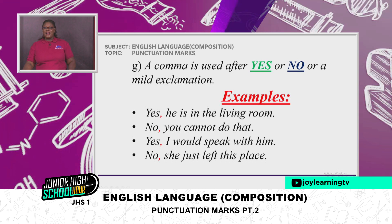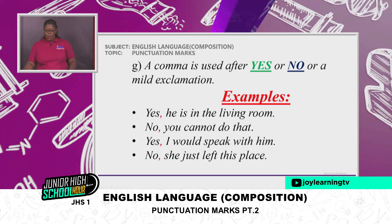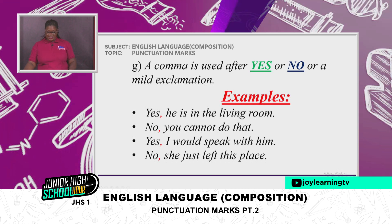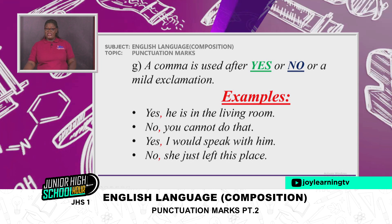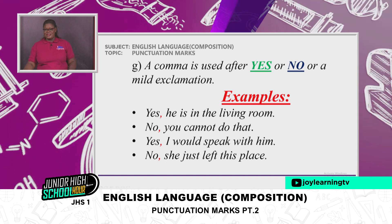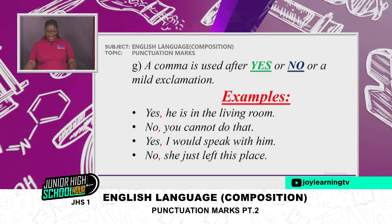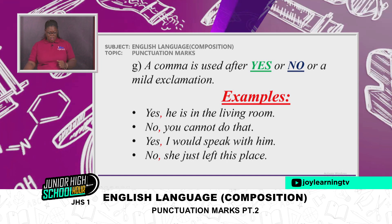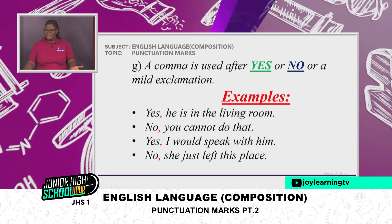A comma is used after 'yes' or 'no' or a mild exclamation. Examples: 'Yes, he is in the living room.' 'No, you cannot do that.' 'Yes, I would speak with him.' 'No, she just left this place.' You can see the commas right there after yes and no.